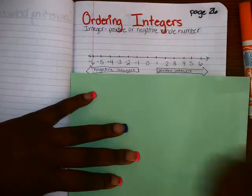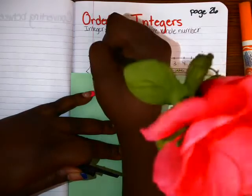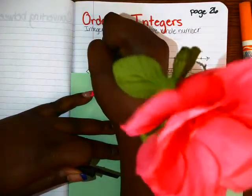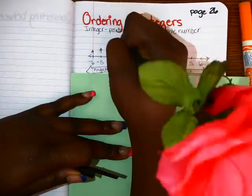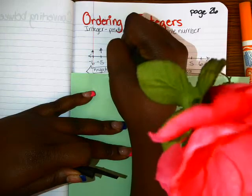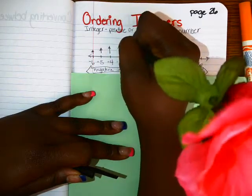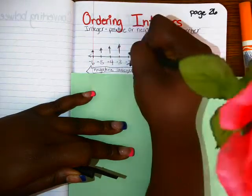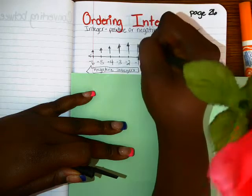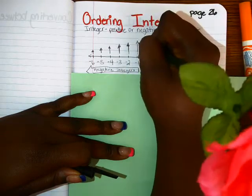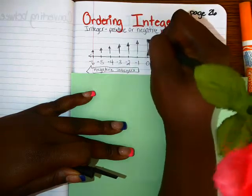Negative integers are smaller than positive integers. So the smallest would be negative six. And as I increase on my number line, the numbers get bigger.